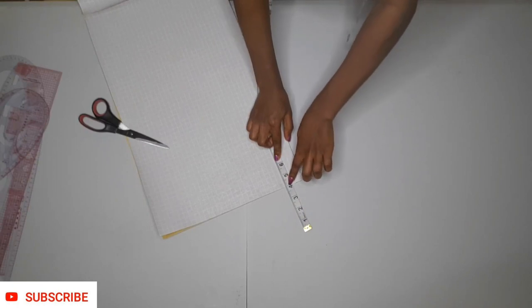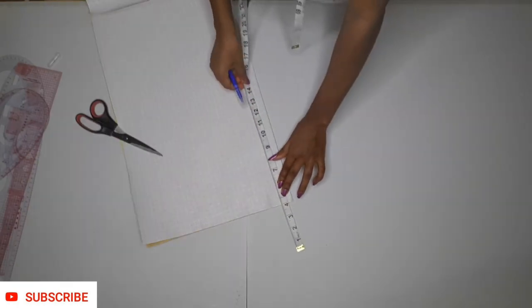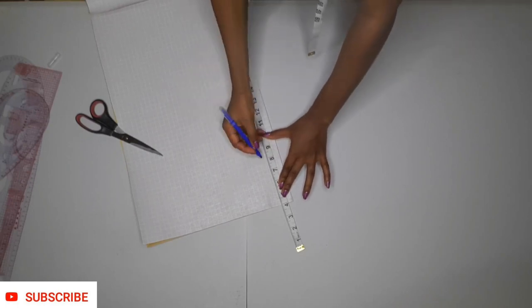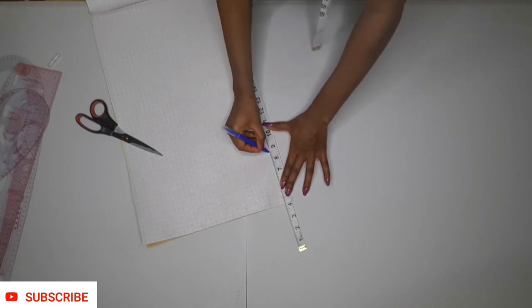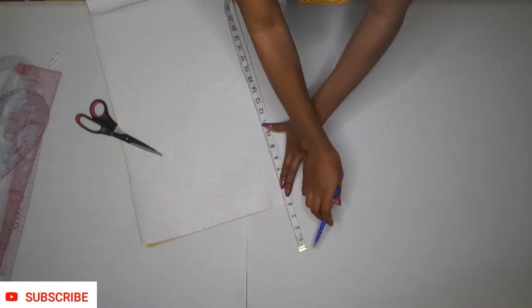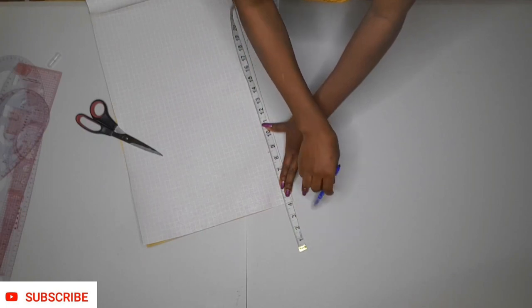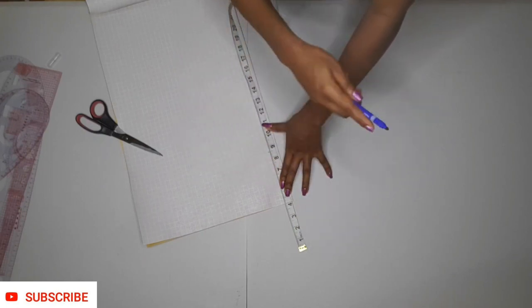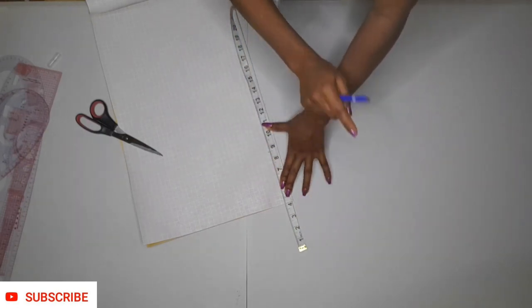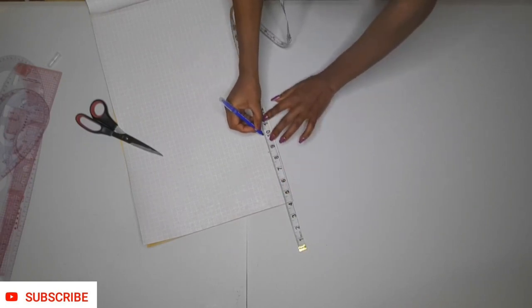Next thing I'm going to do is take my armhole measurement. The half of my armhole is 8.5, so I'm placing the mark like that. We are assuming that our shoulder line is here, but it's not visible in the off-shoulder pattern. Now I'm taking my shoulder to nipple point, that's 10 inches, and I'm marking it.